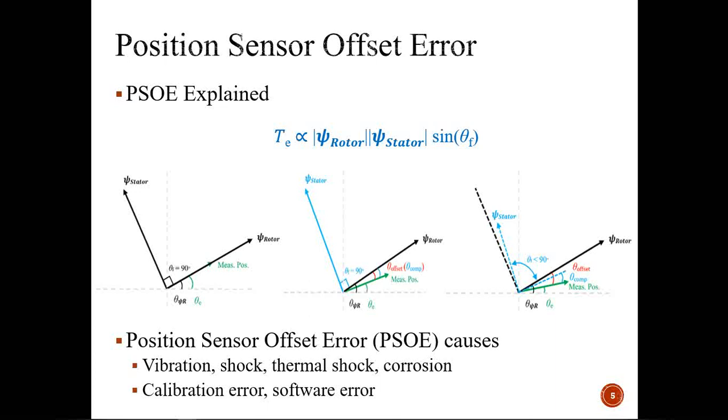We are considering here a surface mount magnet PMSM to simplify the analysis. In the third case, this is where we are highlighting the issue: the measured position is not aligned with the rotor flux vector and the quantified offset is inaccurate. In that case, your stator flux vector is no longer at an optimal position because your theta_f is less than 90 degrees, which results in a reduction in torque.